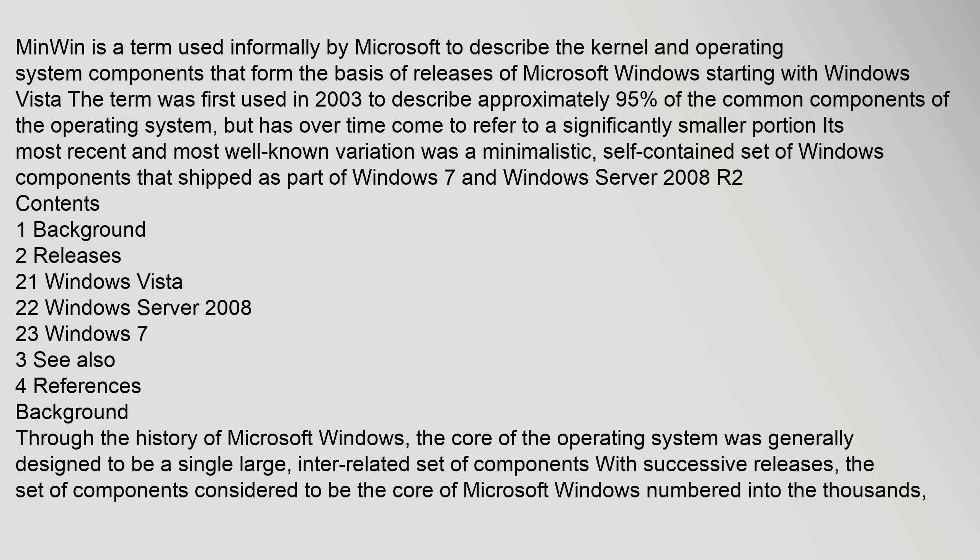Minwin is a term used informally by Microsoft to describe the kernel and operating system components that form the basis of releases of Microsoft Windows starting with Windows Vista. The term was first used in 2003 to describe approximately 95% of the common components of the operating system, but has over time come to refer to a significantly smaller portion. Its most recent and most well-known variation was a minimalistic, self-contained set of Windows components that shipped as part of Windows 7 and Windows Server 2008 R2.